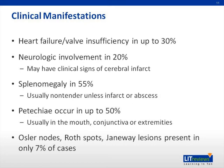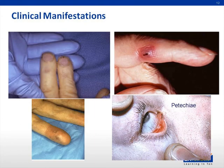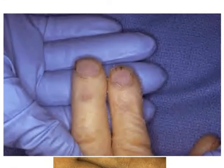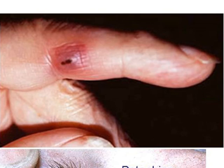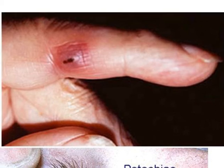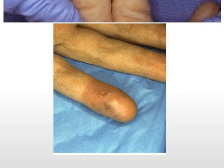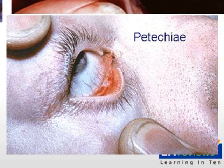The classic exam findings of Osler nodes, Roth spots, and Janeway lesions are only present in 7% of cases. The image on the top left shows a splinter hemorrhage, which occurs due to clots that damage the capillaries under the nail bed. The image on the top right shows a Janeway lesion — non-tender, small, erythematous or nodular lesions on the palms or soles, only a few millimeters in diameter, described pathologically as a microabscess from septic emboli of the dermis with marked necrosis and inflammatory infiltrate not involving the epidermis. The image on the bottom left shows an Osler node, which are tender papulopustules on the pulp of the finger. The image on the bottom right shows subconjunctival petechiae.